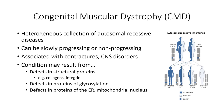Unlike other forms of muscular dystrophy, the mutations are not limited to the dystrophin-associated glycoprotein complex. Proteins associated with the endoplasmic reticulum, mitochondria, and nucleus have all been identified as belonging to the CMD family of disorders.